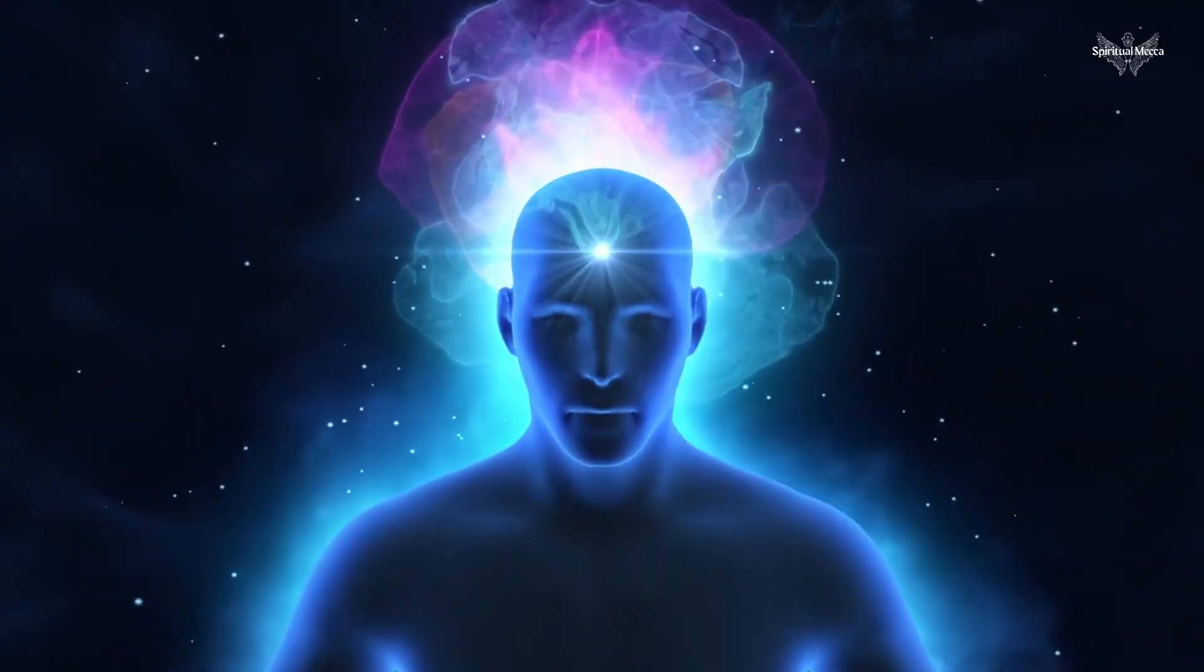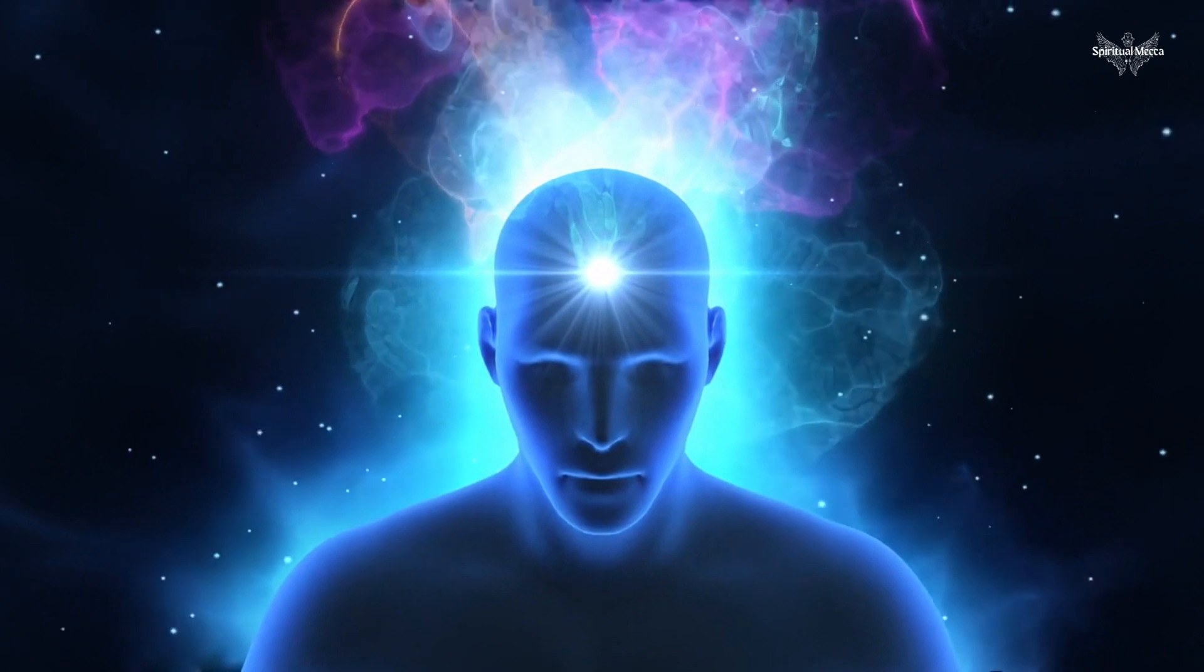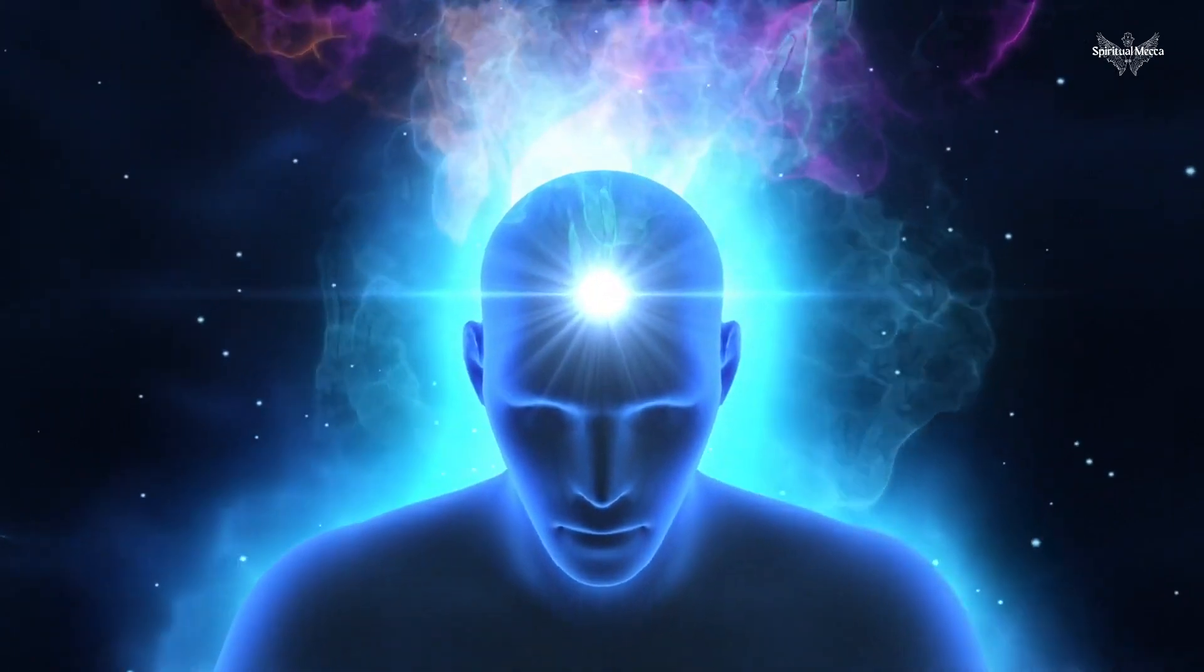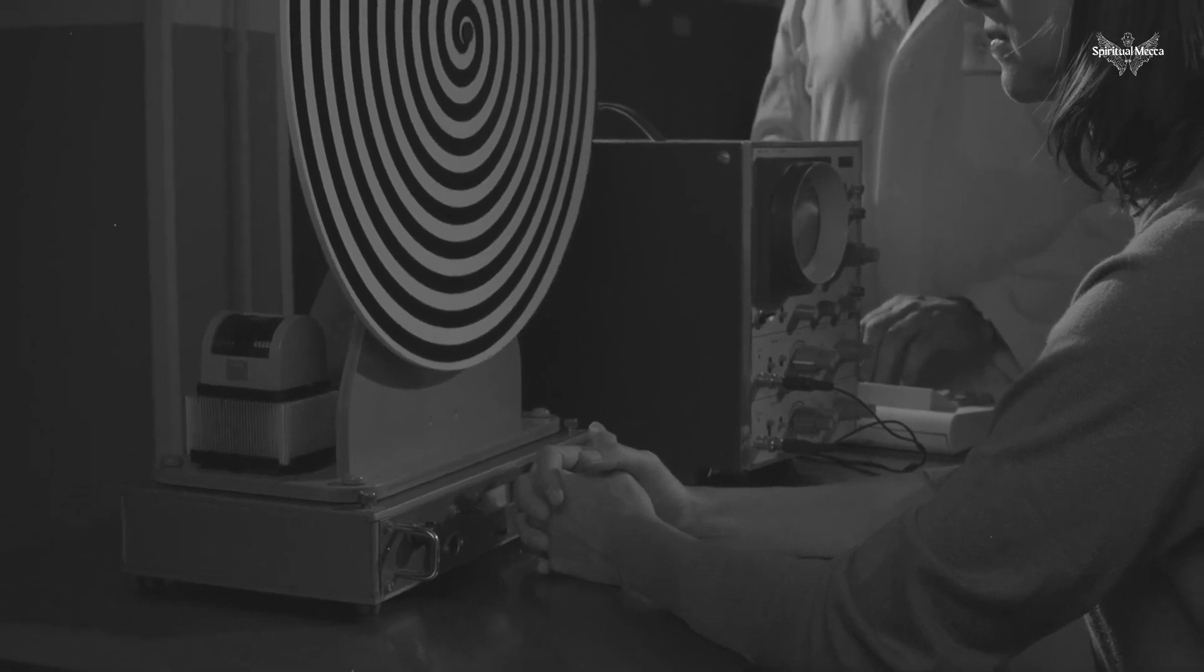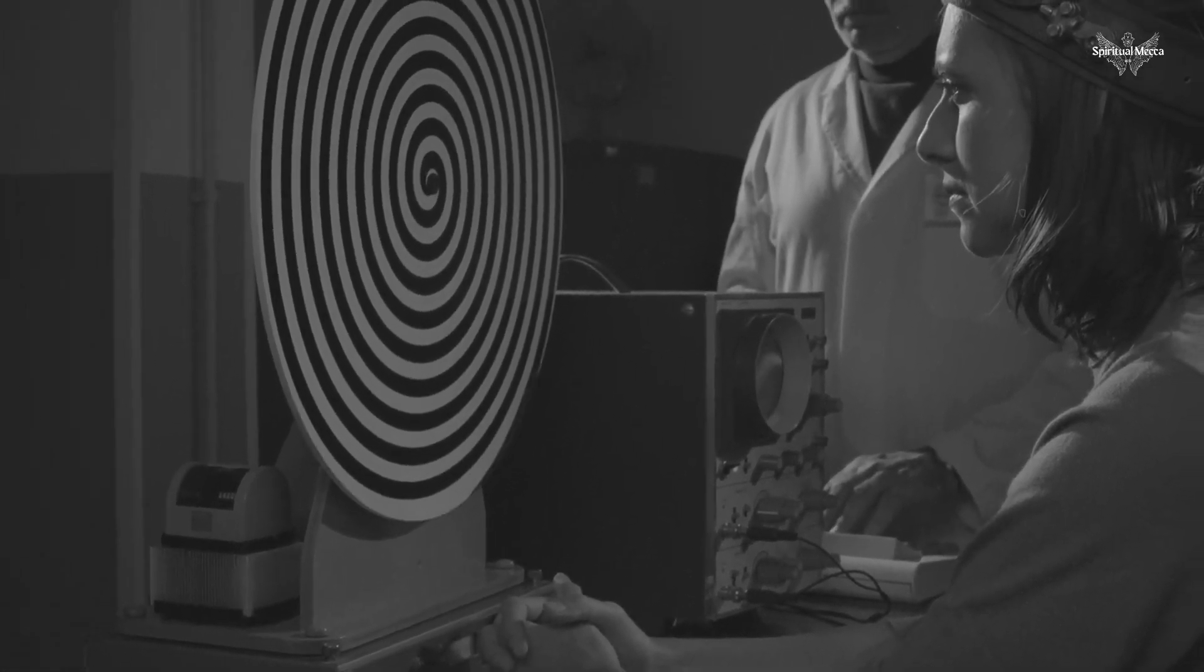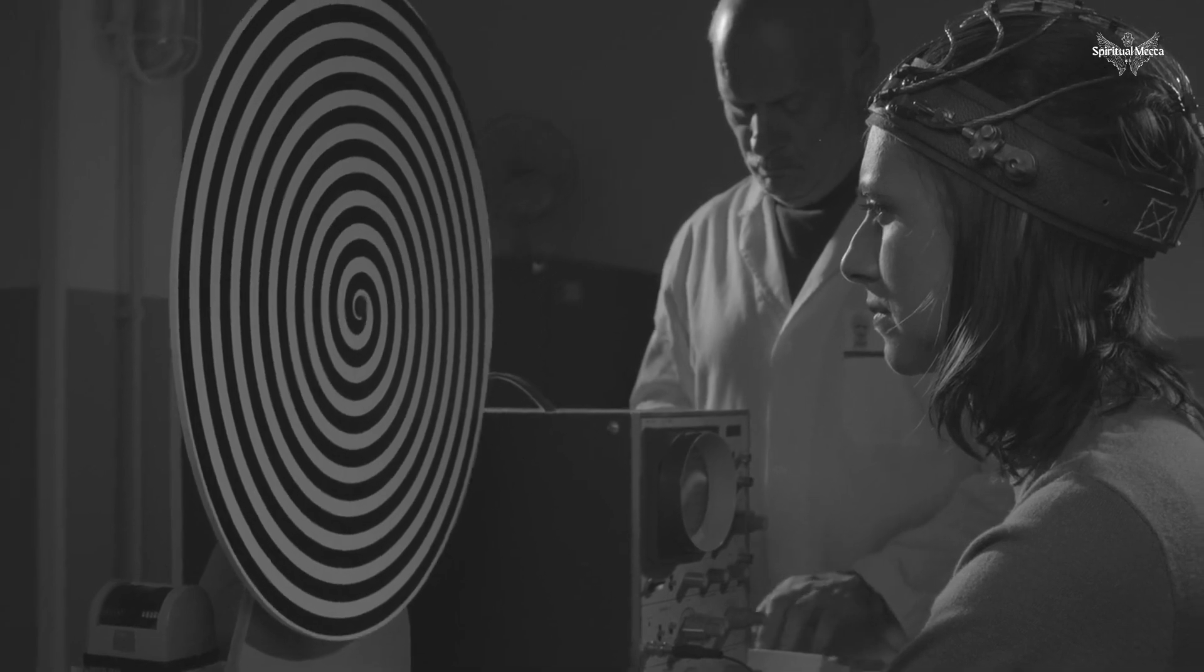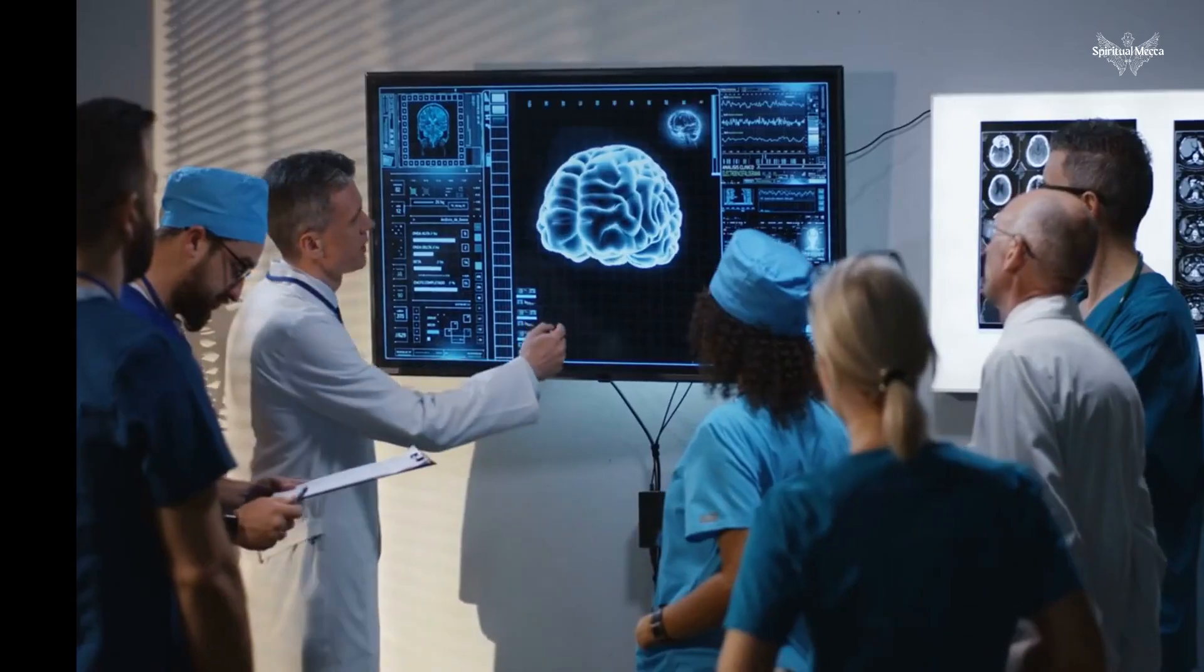Here are the three ways to achieve altered states of consciousness as detailed in the CIA's 1983 report. Number one, hypnosis. The report says that hypnosis enables the left side of the brain, which is our logical side, to be put into a sleep state.